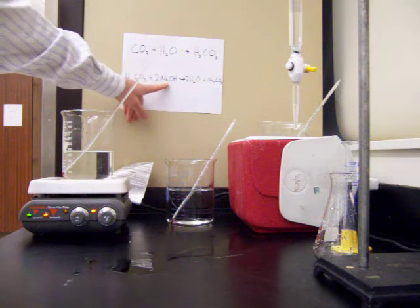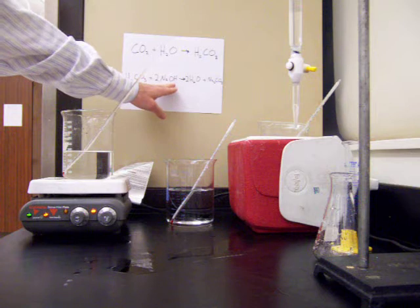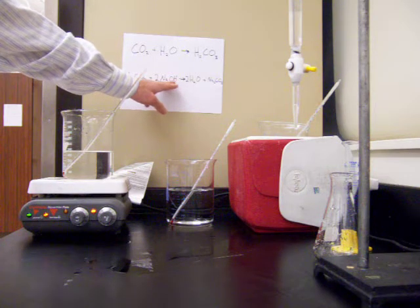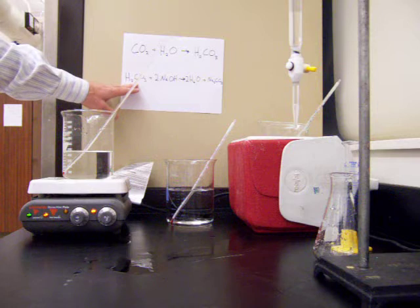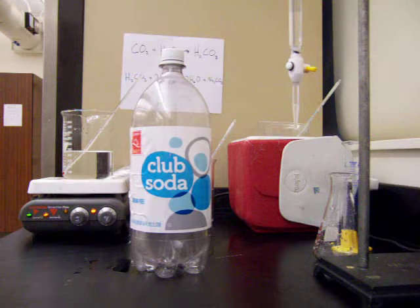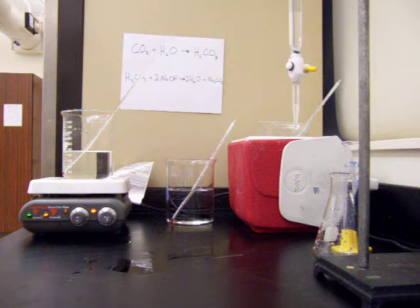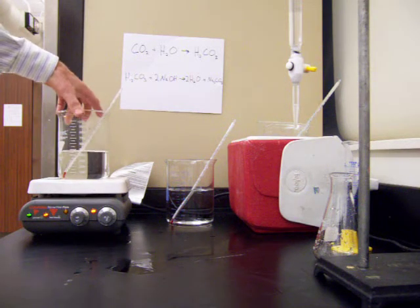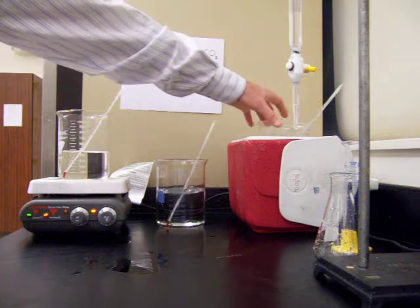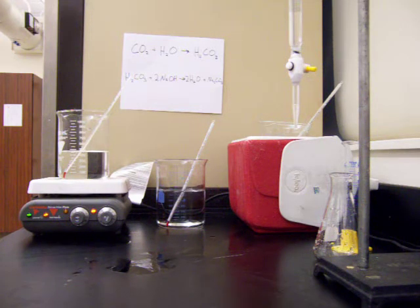We're going to be titrating the acid with a base — a neutralization reaction between carbonic acid and sodium hydroxide to produce water and a salt. During this neutralization reaction we'll measure the amount of sodium hydroxide required to reach the equivalence point, then calculate the number of moles of carbonic acid in the original sample. We'll do this at three different temperatures: one warmed on a hot plate, one at room temperature, and one on ice.